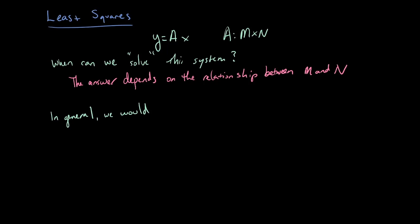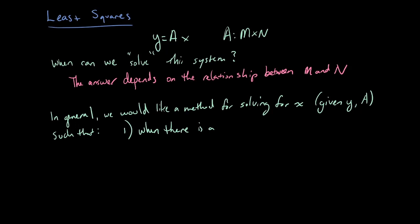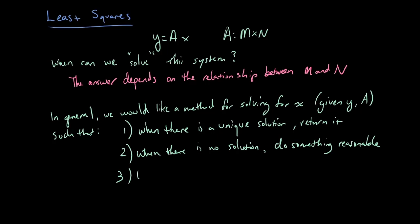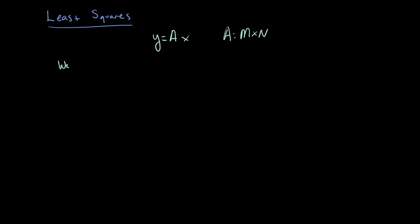What do we do when we're solving a system of equations? We'd like a method for solving for x given y and A that satisfies three desirable properties. First, if there is a unique solution we'd like to find it. When there is no solution it should still do something reasonable. If there are many solutions we'd like to choose one in some smart way. A natural approach is to look at the residual. The residual R is y minus Ax, the part of y that x doesn't explain.